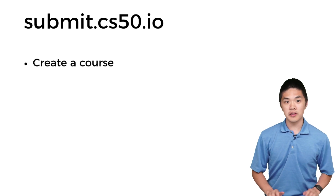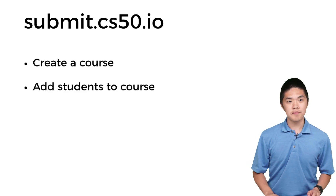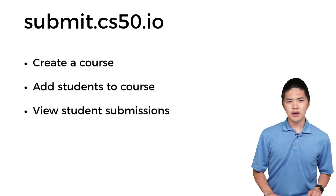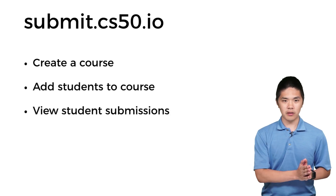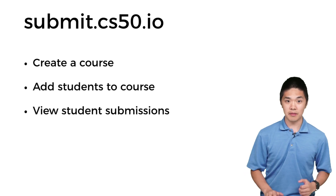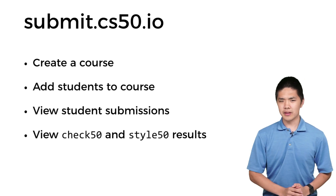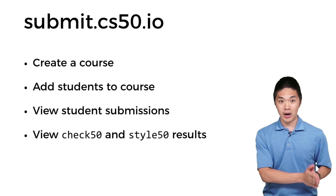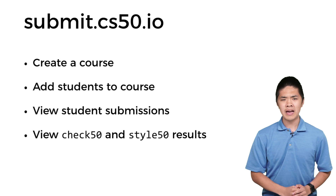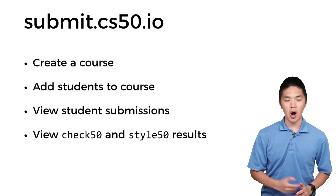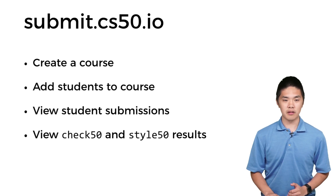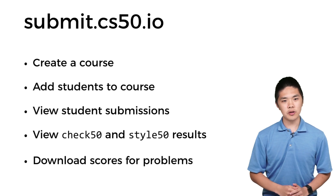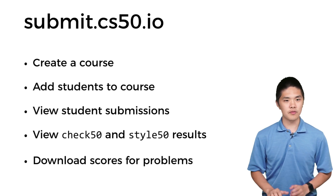Submit.cs50.io will first enable you to create a course online, then add students to that course via an invitation link, then view student submissions for any problems you want to track. You'll also be able to view the results of Check50, which performs automated correctness testing, as well as Style50, which performs automated style testing. In addition, submit.cs50.io will enable you to download scores for those individual problems too.